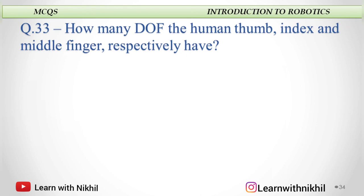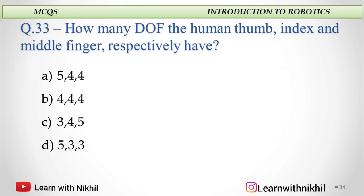Next: How many degrees of freedom do the human thumb, index, and middle finger respectively have? Options: 544, 444, 345, or 533. The degrees of freedom for the human thumb is 5 and all the other fingers are 4. So the answer is 544. Even if you get index, ring finger, or any other finger, that will have 4 DOF. Only the human thumb has an extra degree of freedom, making it 5.